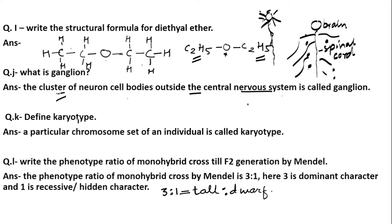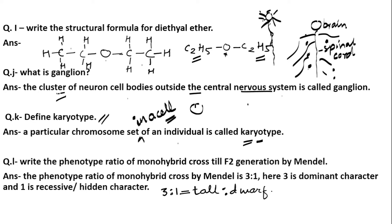Define karyotype. A karyotype refers to the particular chromosome set in a cell of an individual. It represents the number, shape, and particular set of chromosomes found in a cell's nucleus of any living organism.